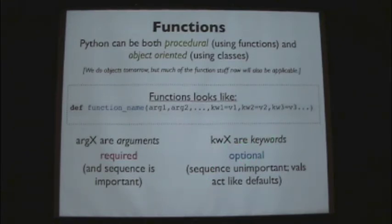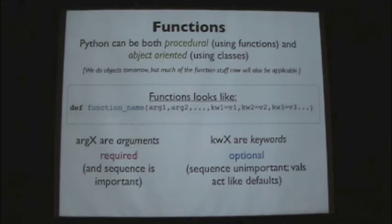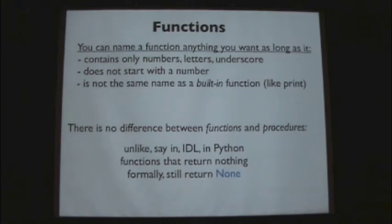Keywords are considered optional. When you say keyword equals value in the function declaration, you're giving it a default, so if you don't pass that keyword when calling the function, the default will be populated. It's a nice way to extend functions you know are already working — add more keywords with defaults matching the legacy behavior, then use them in new code.